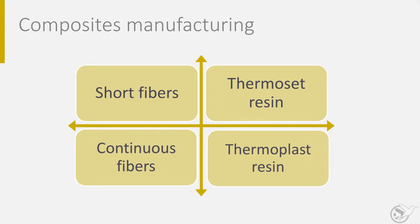This fiber length has an important influence on manufacturing methods. Continuous fibers can be used for steering the process by pulling of the fibers. Short and long fibers cannot be pulled, as they are too short, so they flow with the polymer.